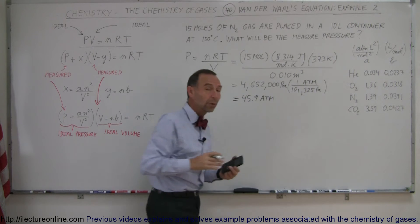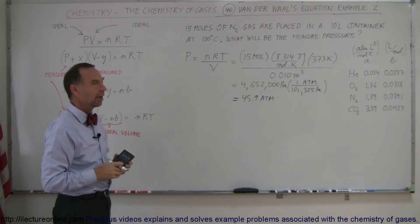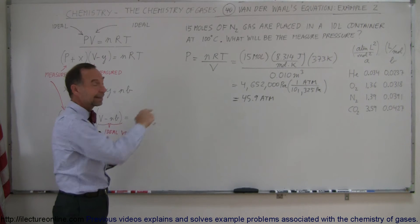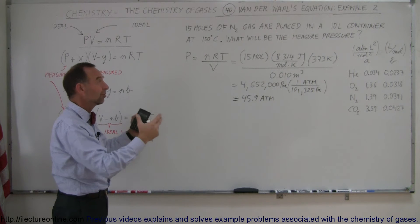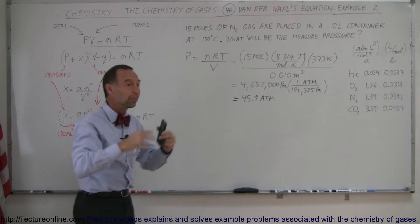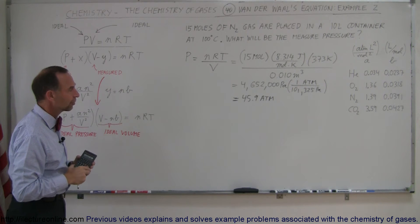So the ideal gas equation tells me that that is the pressure inside that container, the pressure of the gas. If you now go ahead and measure that pressure of that gas, you will not get that number. Van der Waals understood that because, of course, 15 moles stuffed into a 10-liter container, that is a pretty dense gas. Very high pressure, 45.9 atmospheres.